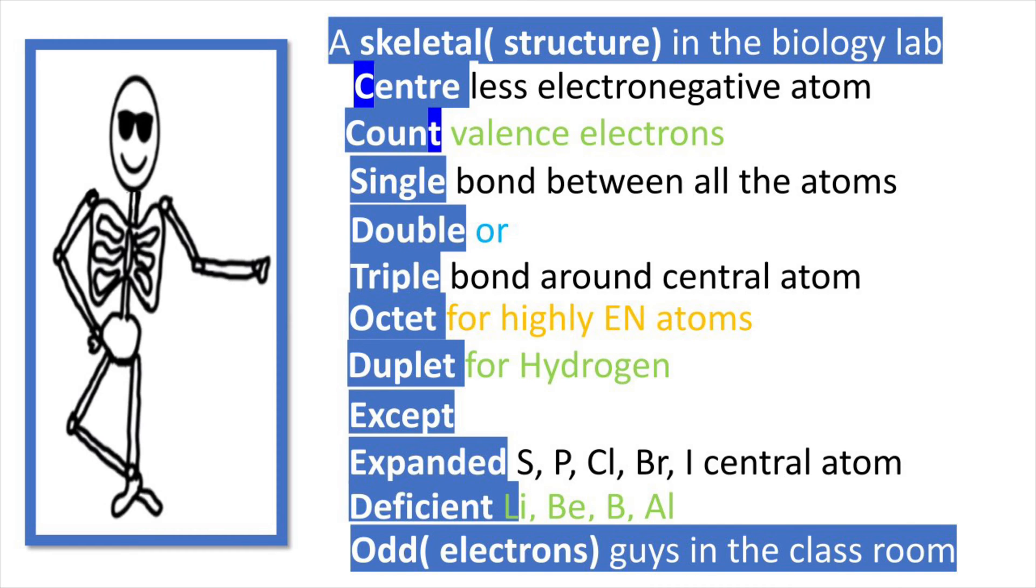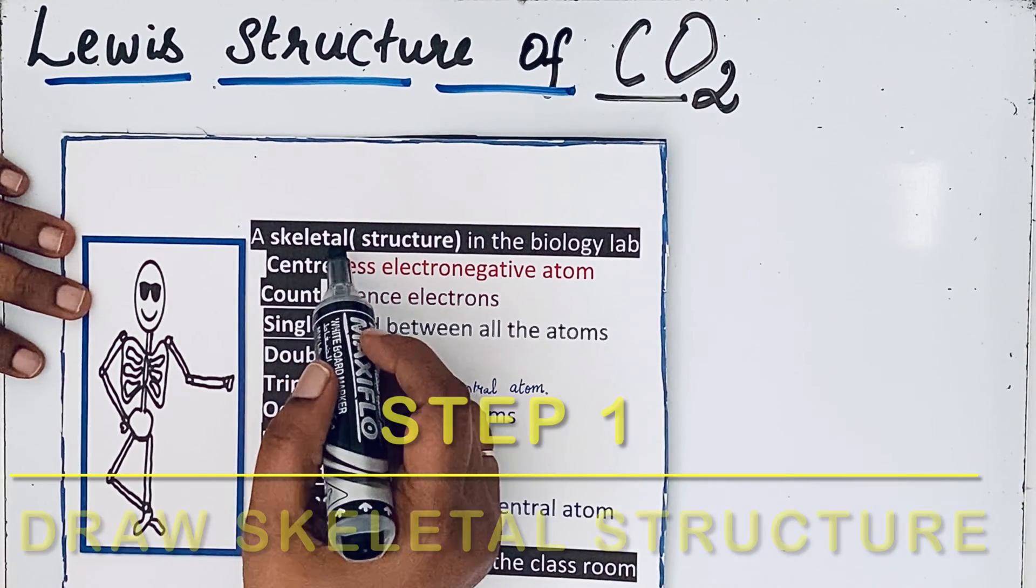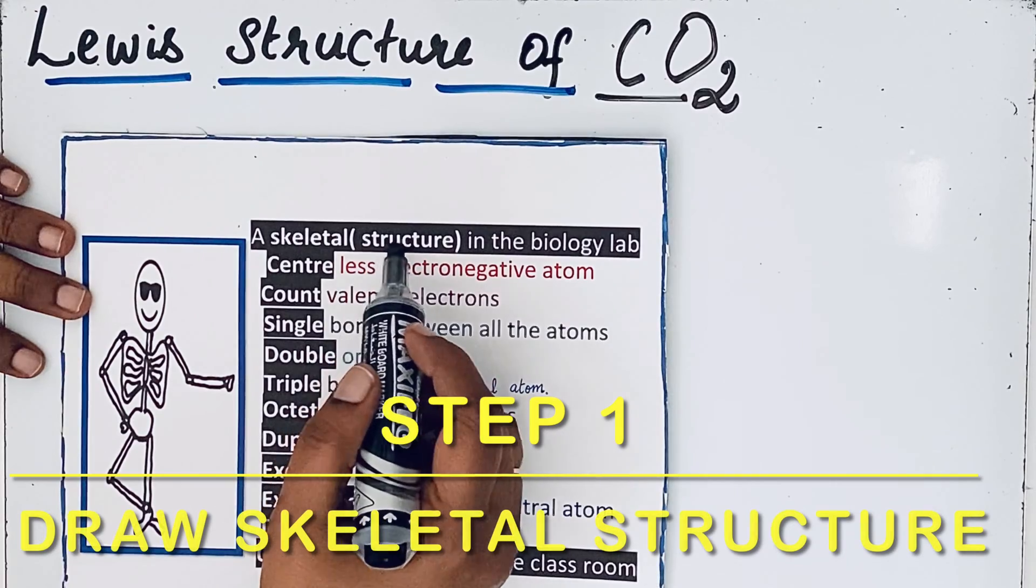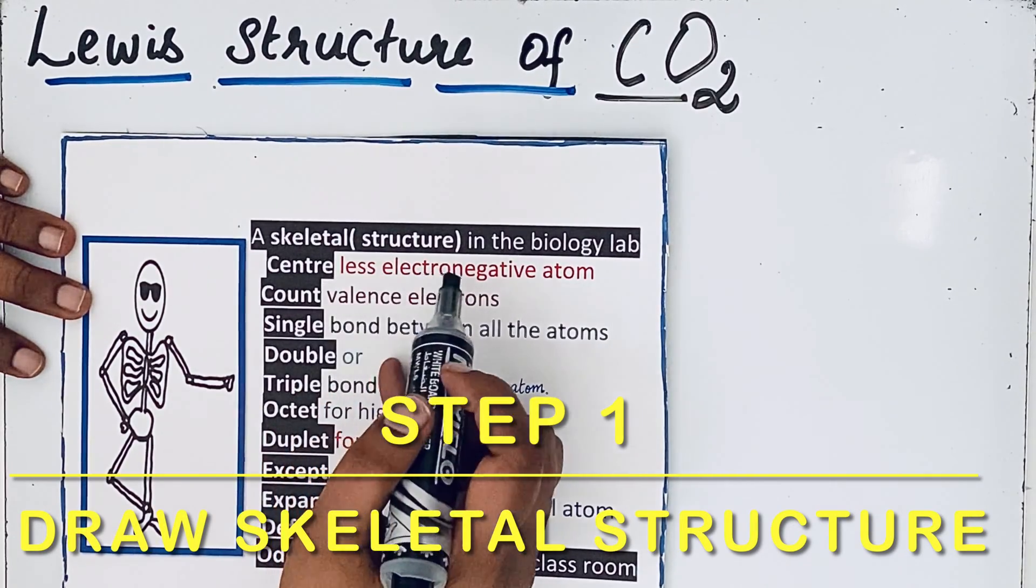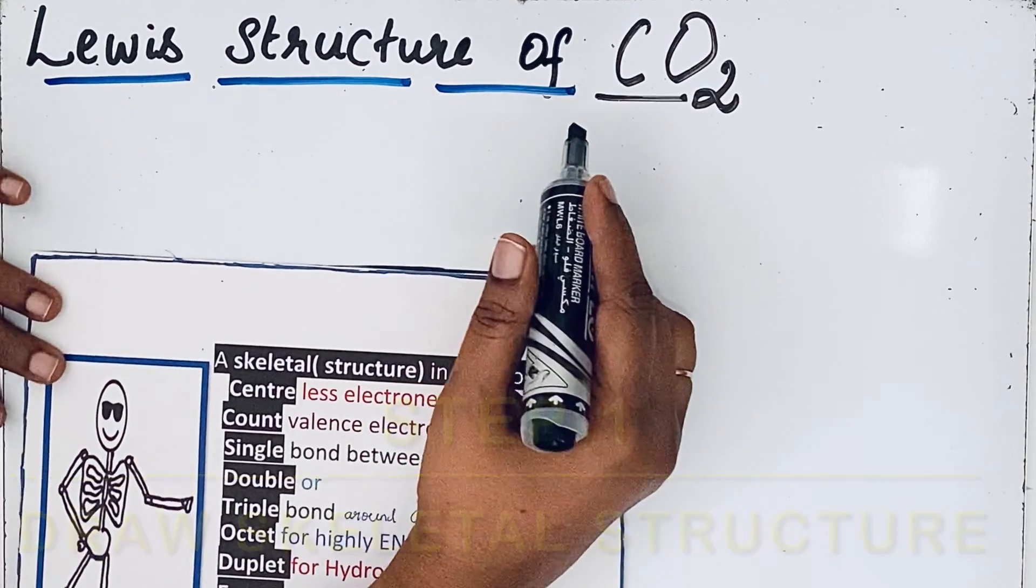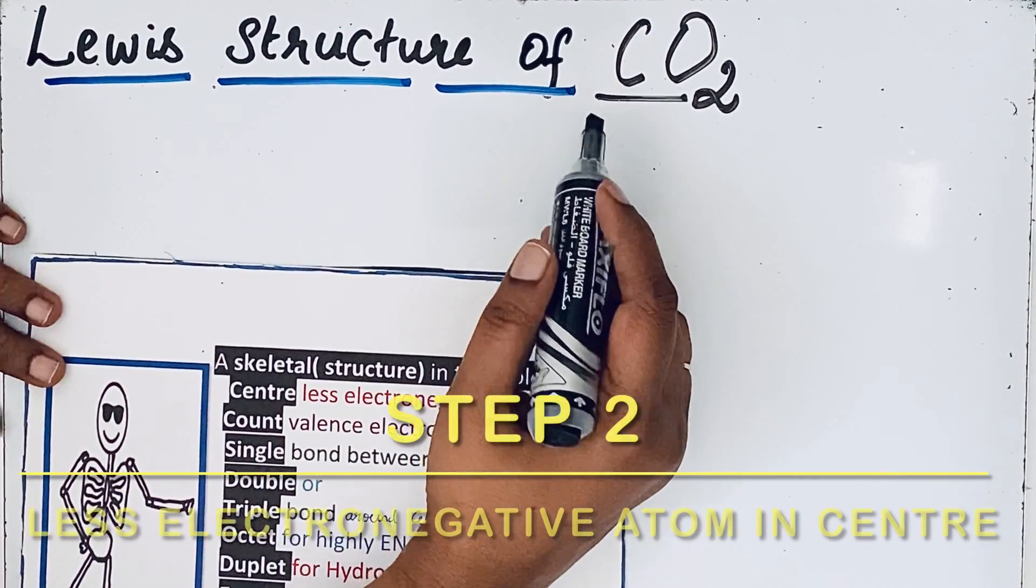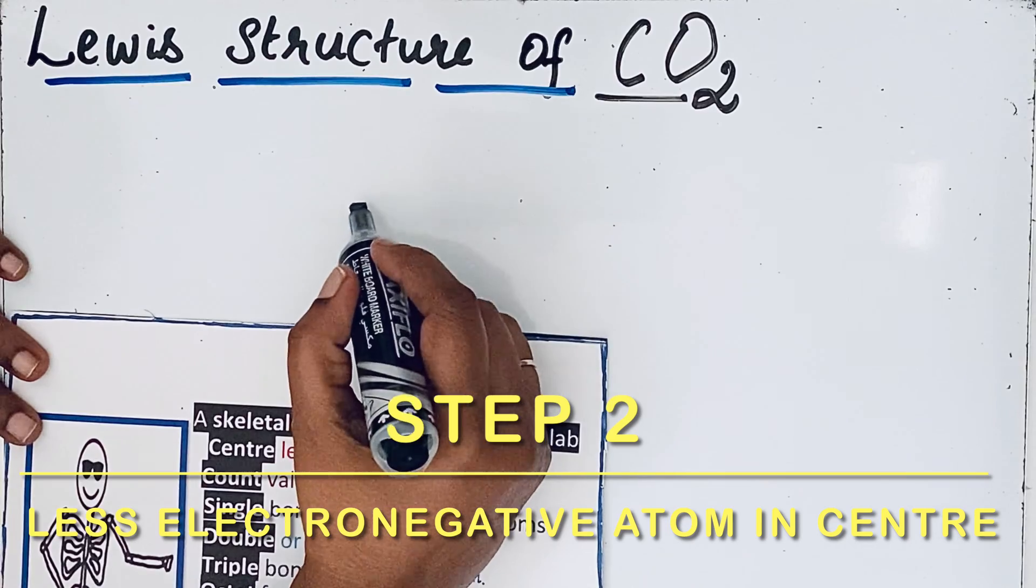A skeletal structure in the biology lab: center, count, single, double, triple, octet, duplet, except expanded, deficient, odd guys in the classroom. Look at the first one, skeletal structure. When you draw the skeletal structure, you should see that the center should be less electronegative atom.